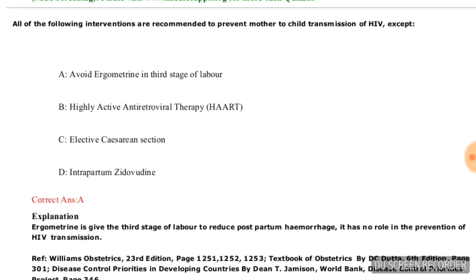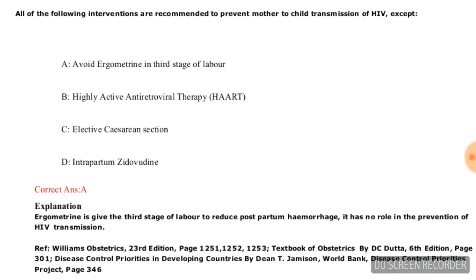All of the following interventions are recommended to prevent mother-to-child transmission of HIV except — options are: avoid ergometrine in the third stage of labour, highly active antiretroviral therapy (HAART), elective caesarean section, or intrapartum zidovudine. The correct answer is 'avoid ergometrine in the third stage of labour' — this is NOT a recommended intervention.